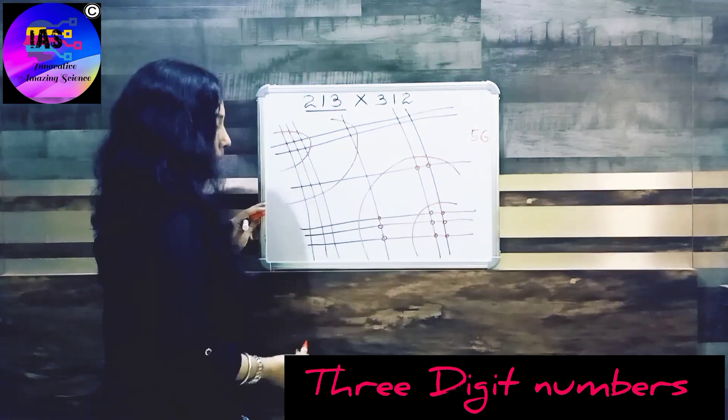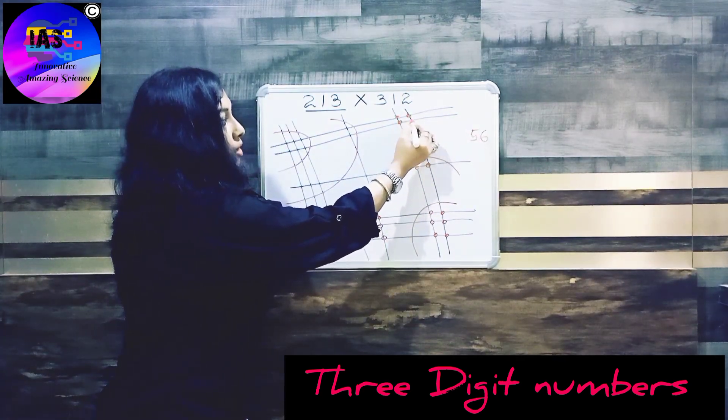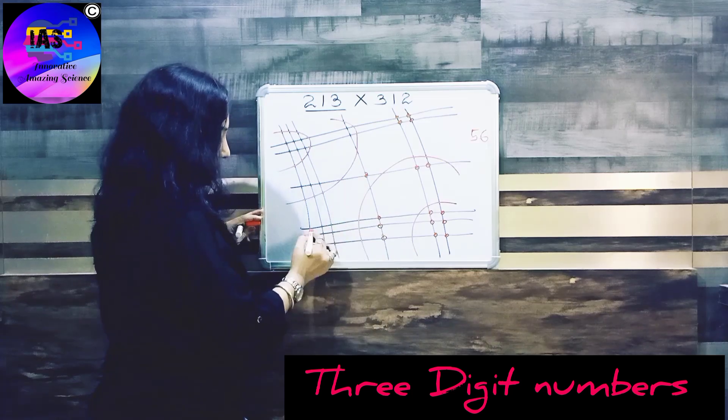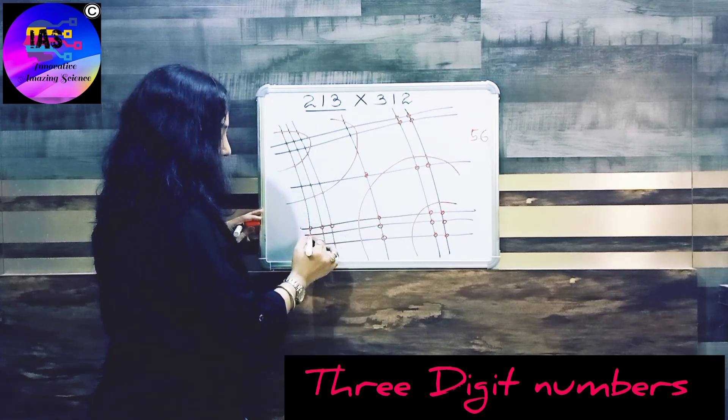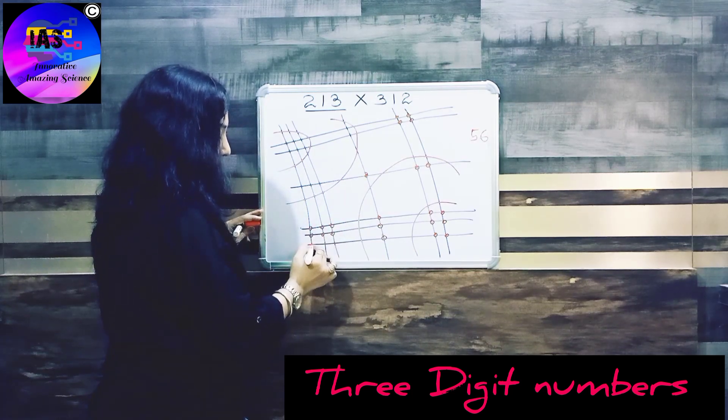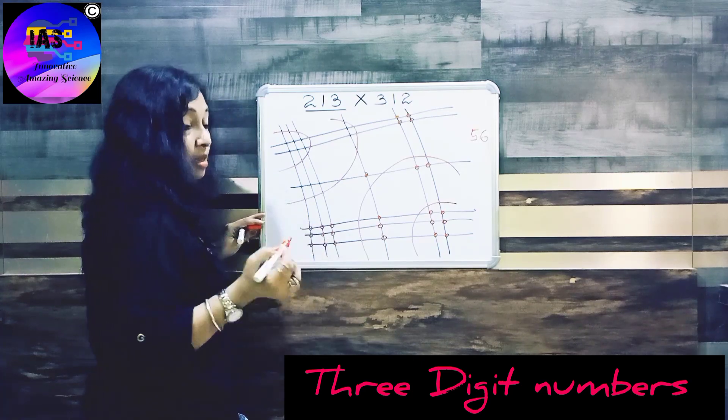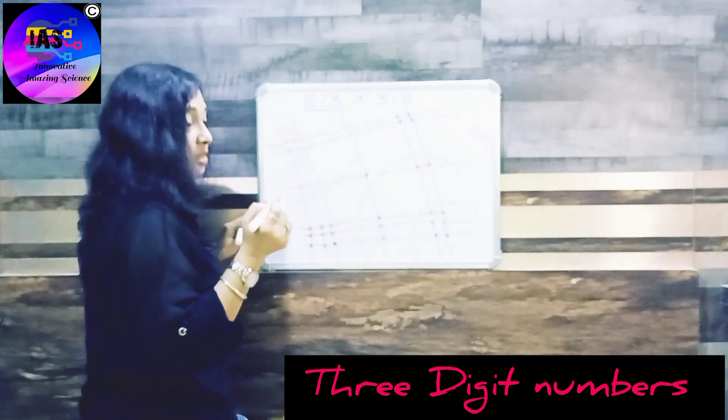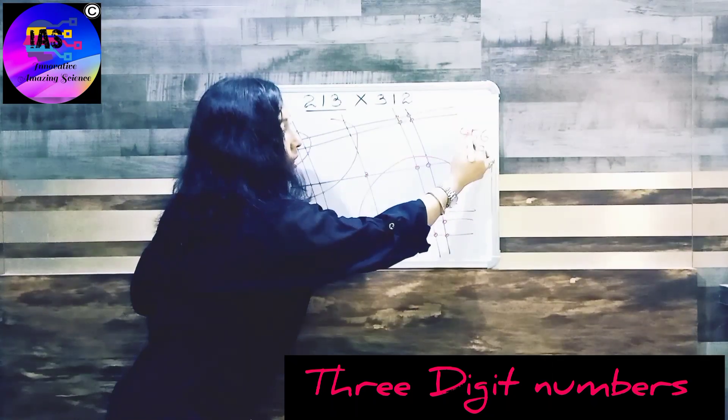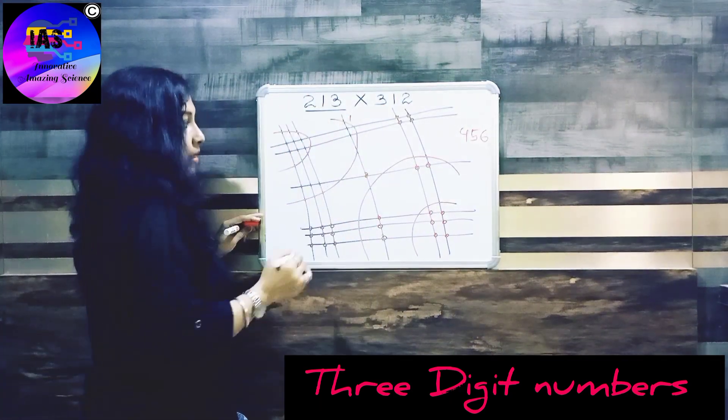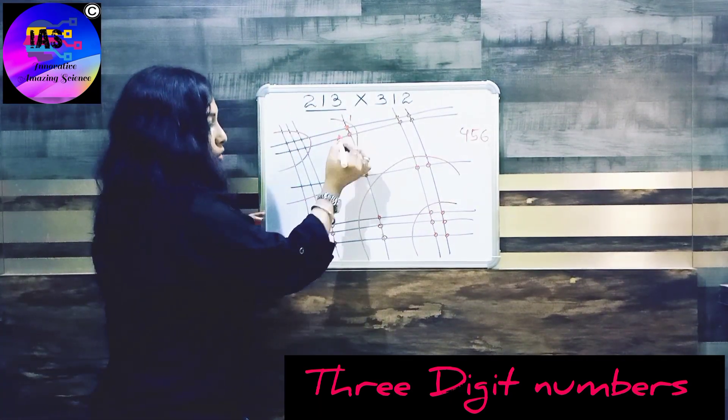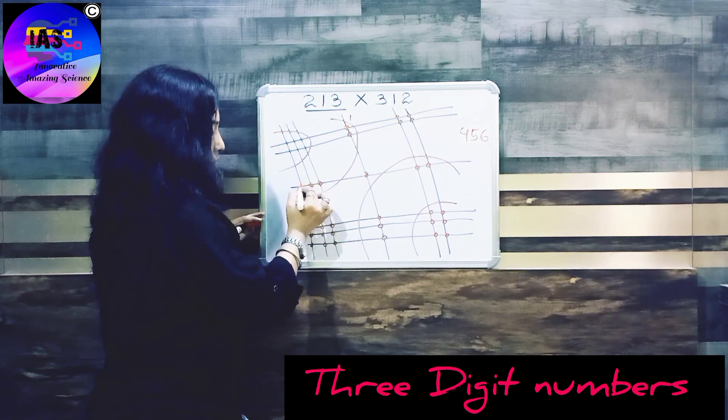Next we have: one, two, three... thirteen, fourteen. So I will not write 14, but I'll write 4 over here and carry 1. Then: one, two, three, four, five, six.